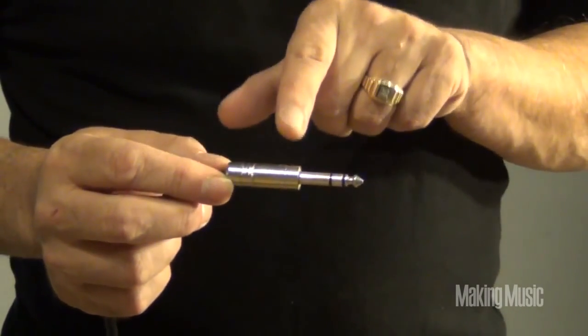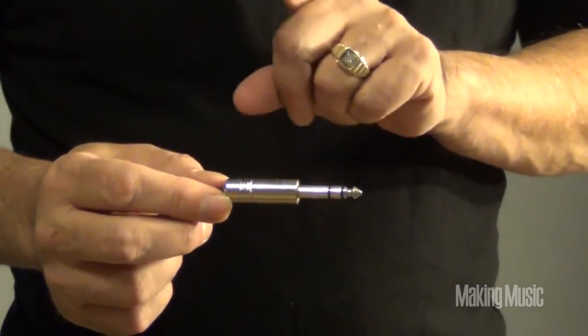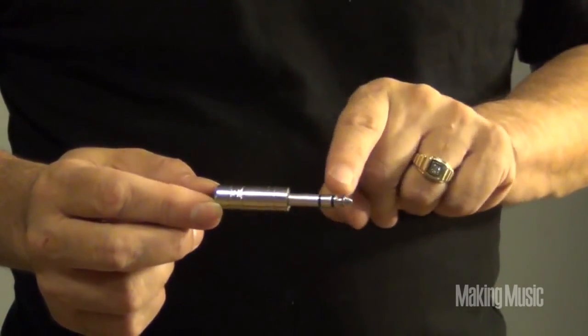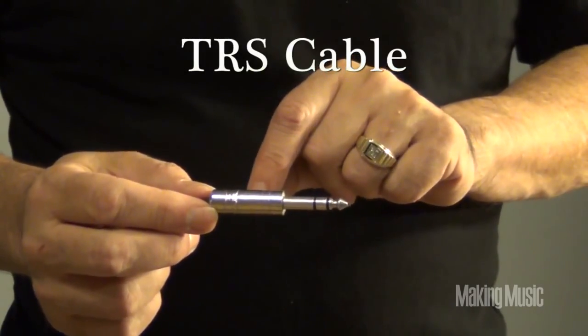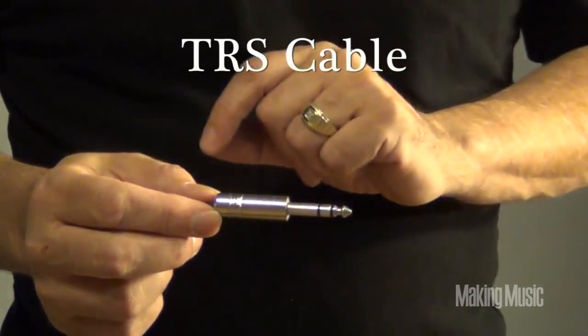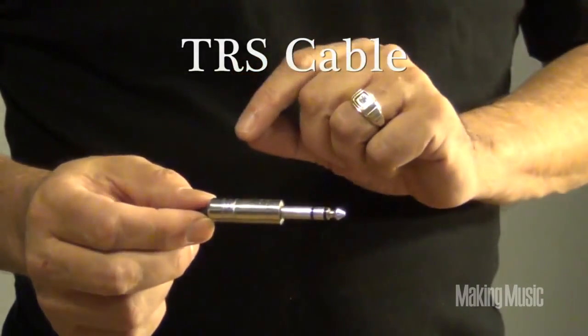Now take a look at this plug. It looks a lot like a standard guitar patch cord, but it's got a tip, a ring, and a sleeve. We call these TRS cables. Tip, ring, sleeve. TRS. And it's balanced. We'll go into that a little bit later.